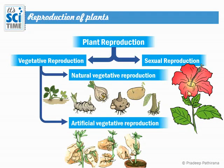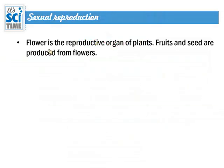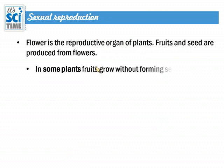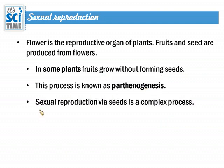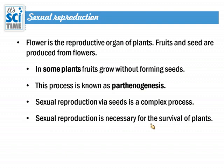The unit of sexual reproduction starts with the flower. The flower is the reproductive organ of plants, and fruits and seeds are produced from flowers. In some plants, fruits grow without forming seeds — this process is known as parthenocarpy. Sexual reproduction involving seeds is a complex process. It is necessary for the survival of plants and is important for variations and the evolution of plants.